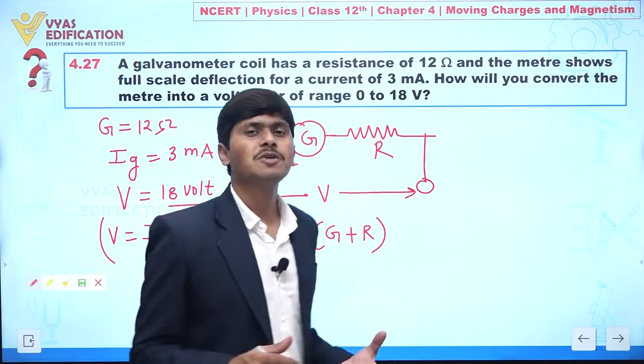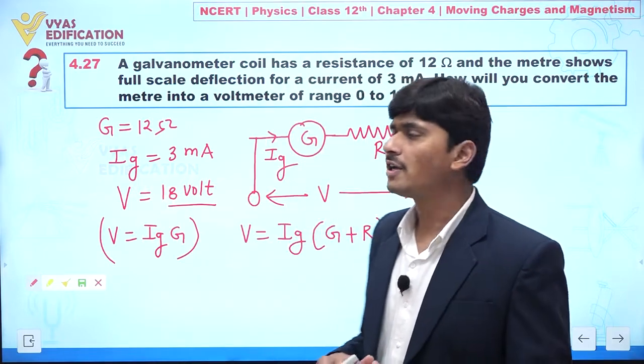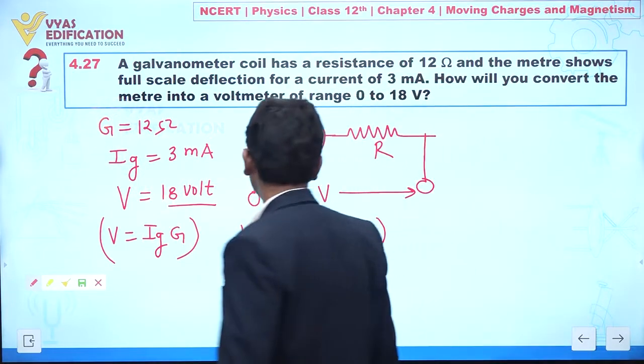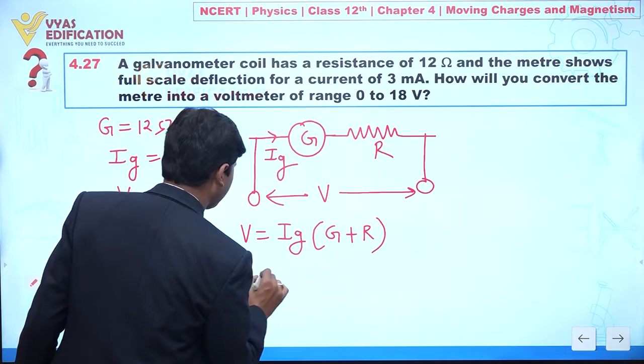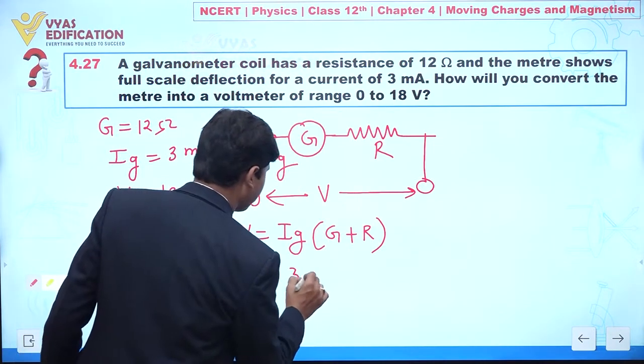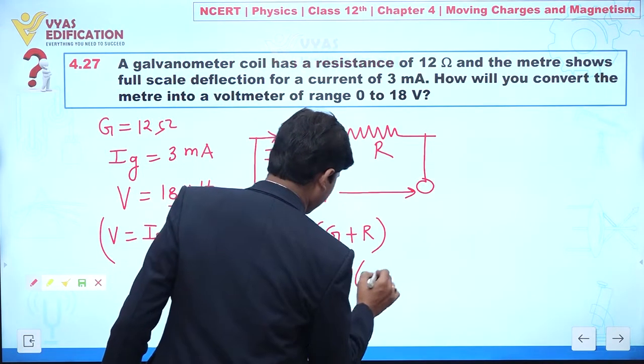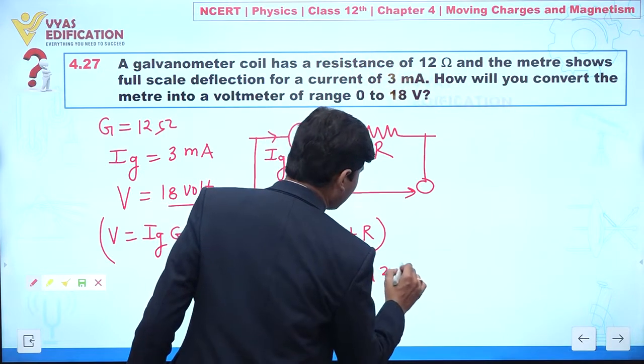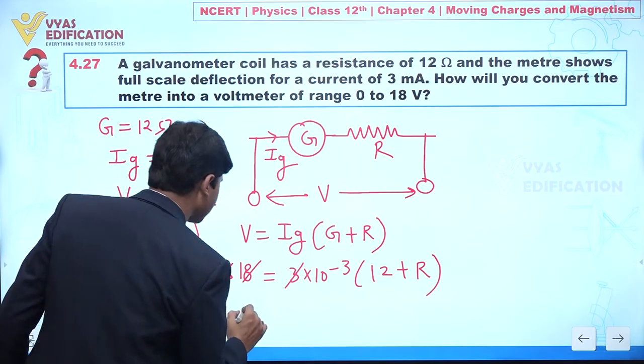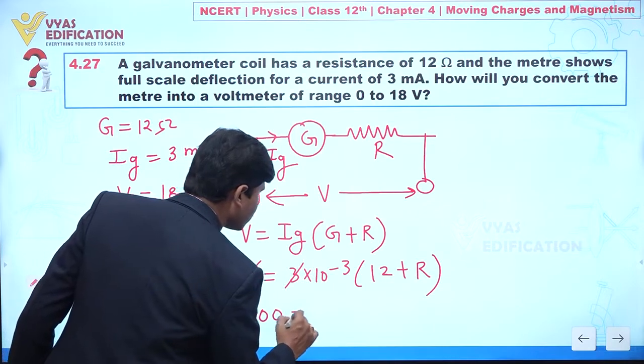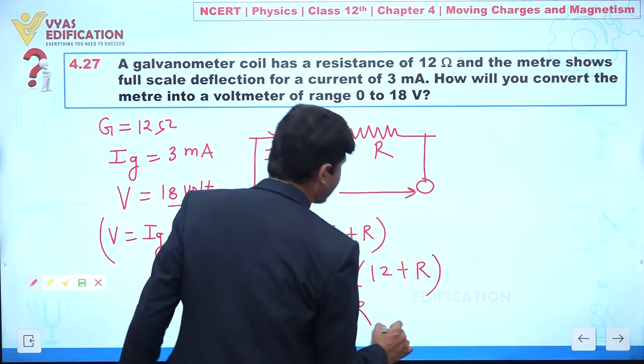This value we have is 18. Ig value is 3 milliampere. We can see capital G is 12 plus R. We can say this is 6, so 6000 should be equal to 12 plus R.